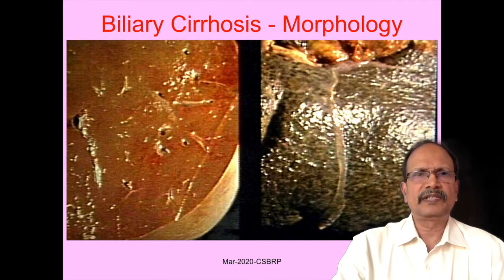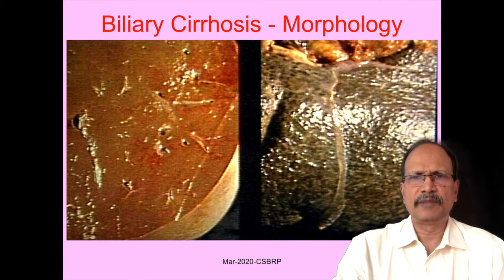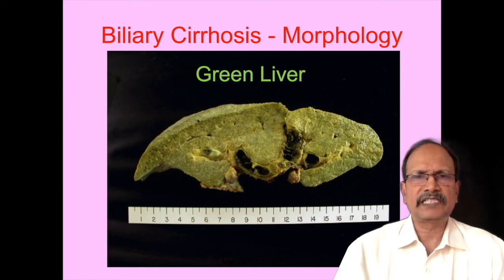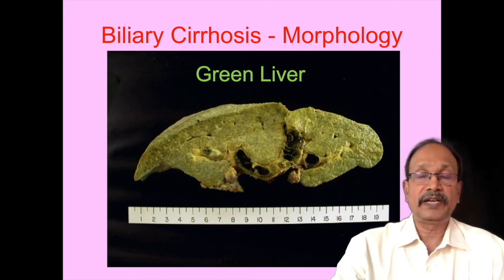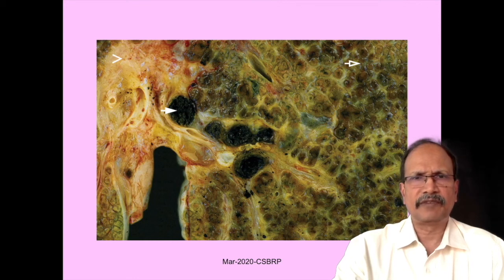Biliary cirrhosis: on the left is the normal cut surface of the liver — you can see brownish colored without any fibrous bands and without any nodularity. Whereas on the right side, you can see the intensely greenish pigment, fibrosis, and nodularity in the cut surface. Green liver is a feature of biliary cirrhosis. If you see a green liver, the possibility of biliary cirrhosis or extrahepatic biliary atresia should be thought of. You can see the intensely greenish colored liver with fibrous bands running around.